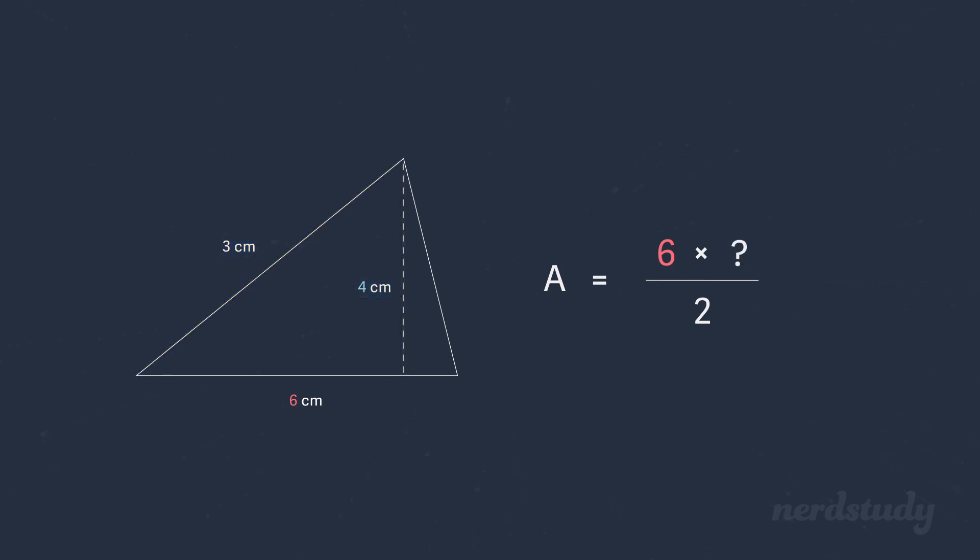Well, 3 centimeters is the length of a side, but in this scenario, 3 centimeters is not the height. The height can be found by starting at the base and measuring all the way up to the highest point in the triangle, assuming that the base is level with the floor. So in this case, the height is 4 centimeters.